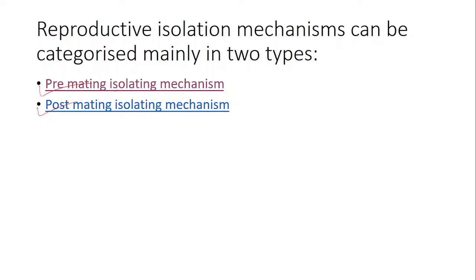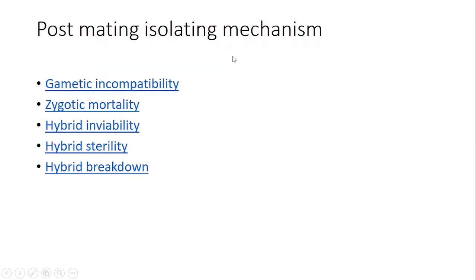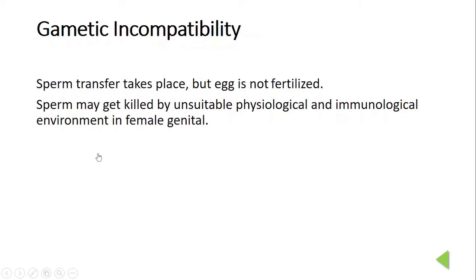After pre-mating isolating mechanisms, we focus on post-mating isolating mechanisms. Post-mating isolating mechanisms can be categorized as gametic incompatibility, zygotic mortality, hybrid inviability, hybrid sterility, and hybrid breakdown. In gametic incompatibility, sperm transfer takes place but eggs do not get fertilized. After insemination, the sperm may be killed by unfavorable conditions of the female reproductive tract, such as harsh pH, temperature, or immunological reactions.